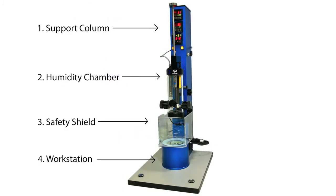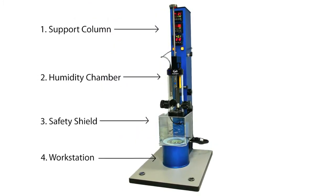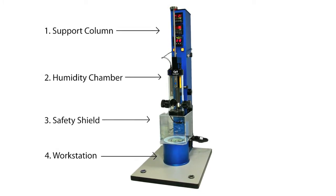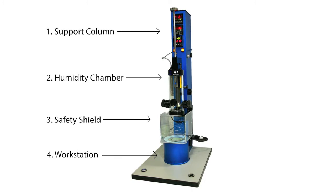The Cryo Plunge 3 consists of four major components: a support column, a humidity chamber, a safety shield, and a cryogenic workstation.